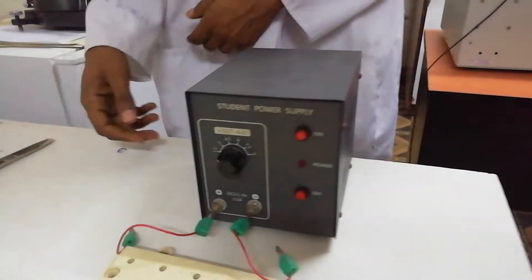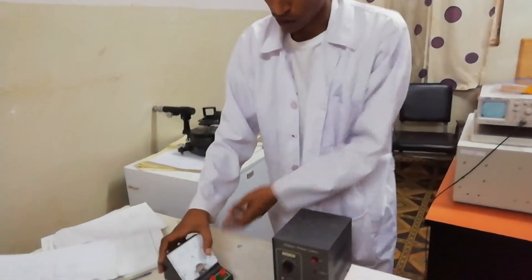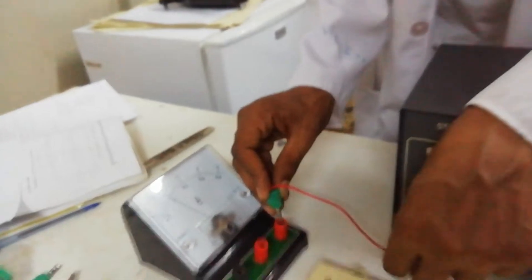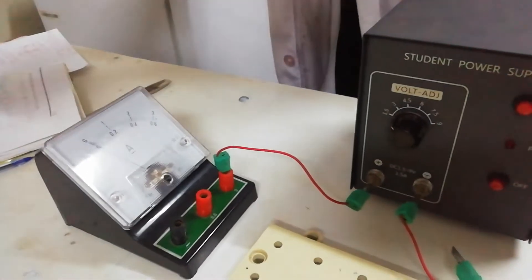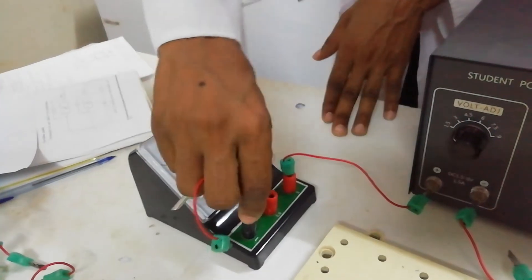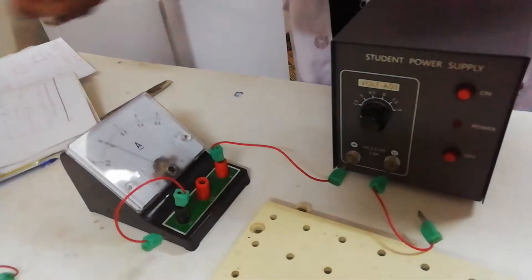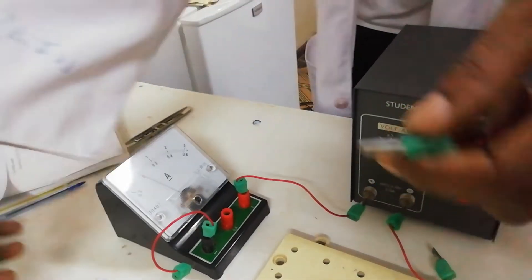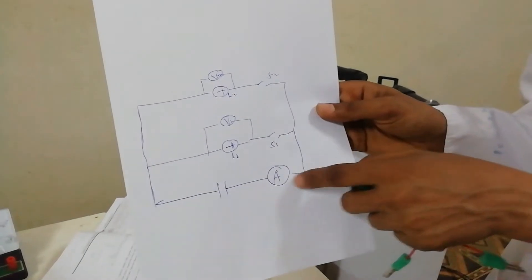The second step: the positive terminal is connected to the ammeter. The current enters the positive terminal of the ammeter and exits from the negative terminal. We connect in series with the power. Then from the ammeter, we connect to the first switch by making a junction between them.